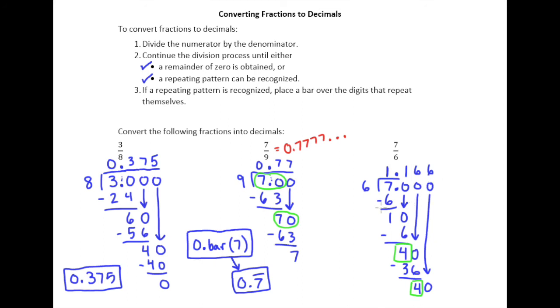But what makes this problem different than the previous one is that the repeating doesn't start right away. We had two digits here in our quotient that were not a part of this repeating process. And so what we would write here as our answer is 1.16, and then that bar is just going to go over that 6.